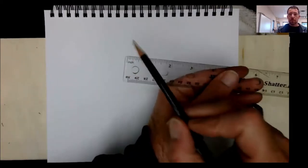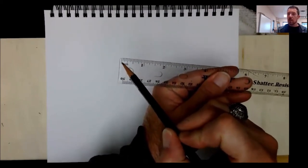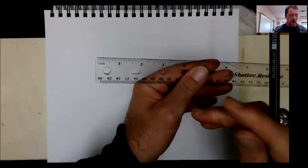This particular ruler, zero starts here. It doesn't start at the end, it starts here at the, well probably about an eighth of an inch in.